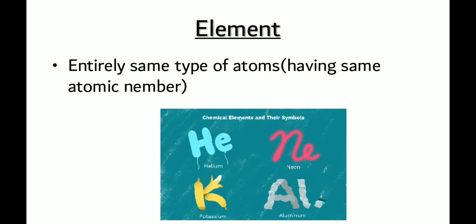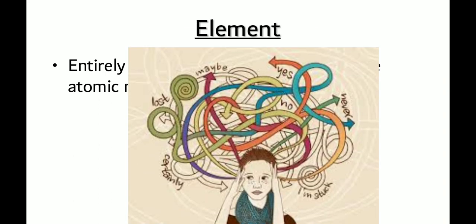Next, what is an element? An element is composed of the same type of atoms having the same atomic number. You can say an element is a collection of atoms. A collection of carbon atoms is the carbon element. Similarly, a collection of nitrogen atoms is the nitrogen element. Examples include helium, neon, potassium, and aluminium. If you are still confused about the difference between atom and element, the next example will make it clear.